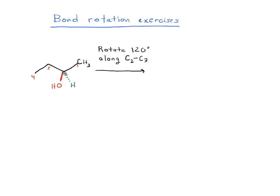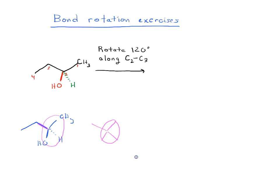Let's look at carbon 2. We're going to rotate this 120 degrees along the C2 to C3 axis. If you remember the analogy we drew between doing bond rotations and steering wheels, you can imagine this as the three parts of your steering wheel, and imagine that this is the axis of your steering wheel — just like looking at a steering wheel like this. So what you're going to do is, just like you'd rotate a steering wheel 120 degrees, we're going to rotate our carbon 2 120 degrees. Thinking of it like a steering wheel, we could put the CH₃ up here, the H down here, and the OH here.